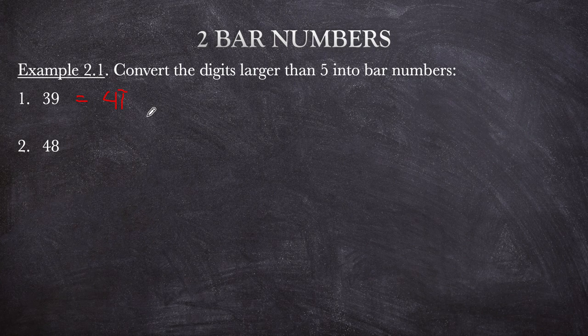For 48: 8 is bigger than 5, so we add 1 to 4, giving 5. Then applying 'last from 10' gives 5 bar 2.